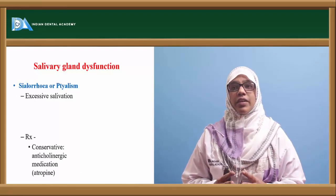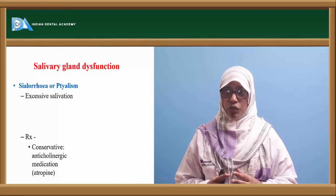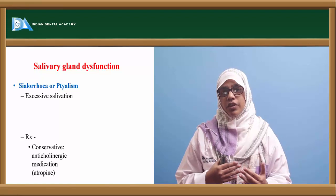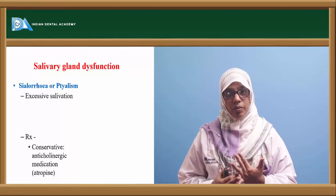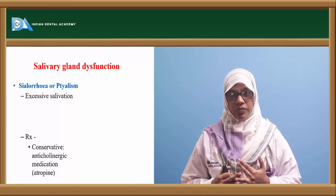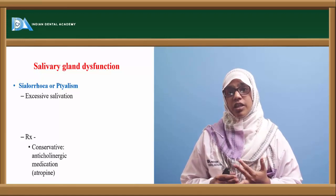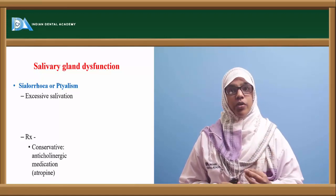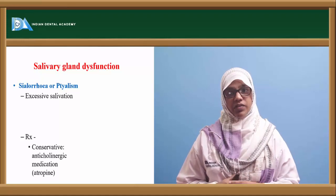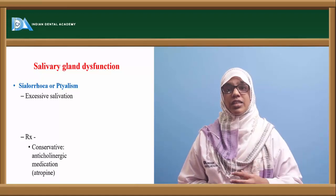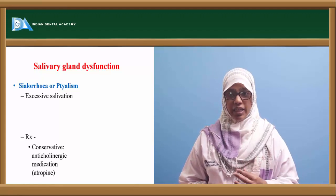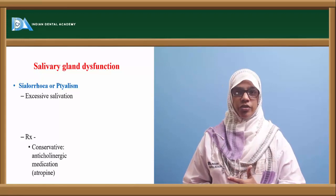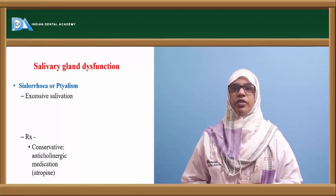Salivary gland dysfunction can be sialorrhea or ptyalism — excessive salivation. This can occur because of an aphthous ulcer present in the mouth, ill-fitting dentures, rabies, or metal poisoning. Treatment is conservative by giving anticholinergic medications like atropine. We use these medications mostly when doing a GA procedure, to decrease salivation and get a better feel of the area.